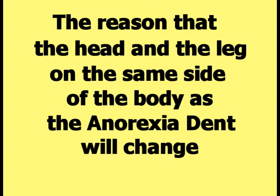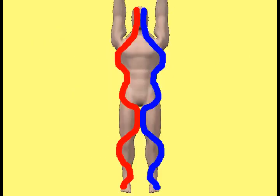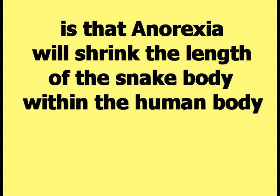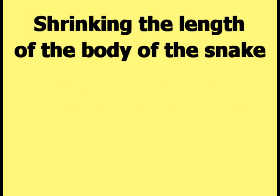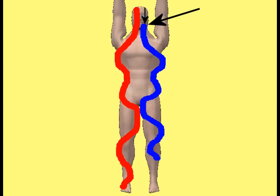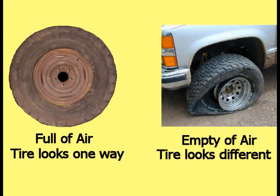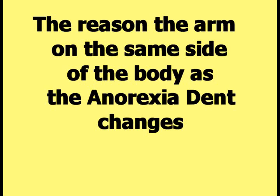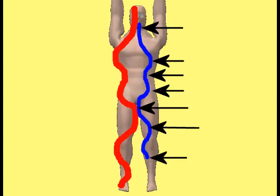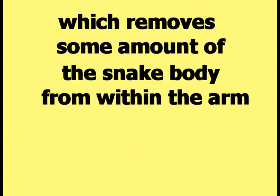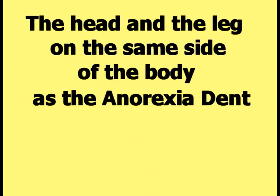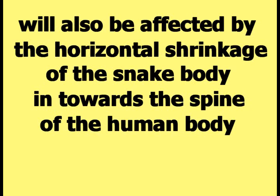The reason the head and leg on the same side of the body as the anorexia dent will change, using the two snakes' view explanation, is that anorexia will shrink the length of the snake body. This pulls the head of the snake down from within the human head into the body, and pulls the tail up from within the foot into the leg. The withdrawing of the snake body from the human head and leg will change their normal shape, size, location, and orientation — similar to how letting air out of a tire changes its physical characteristics. The arm on the same side changes mainly due to horizontal shrinkage of the snake body, which removes some snake body from within the arm.